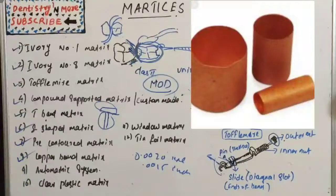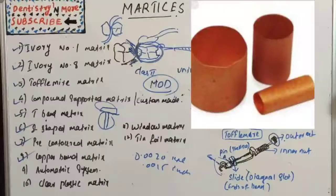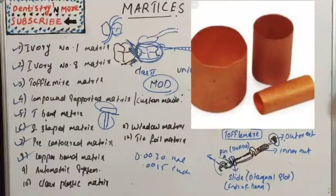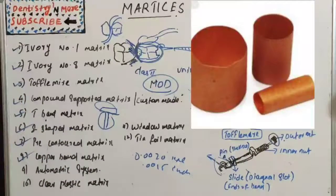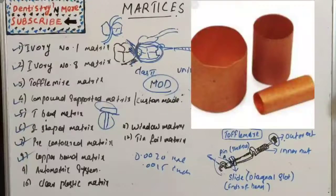Copper band matrix system uses copper bands of assorted sizes, which are cylindrical in shape and selected according to the diameter of the tooth to be restored. The bands are softened by heating to redness in a flame and quenched in water. After this, the bands can be stretched and shaped with contouring pliers, the occlusal height adjusted, and the band contoured to reproduce the proper shape of the contact area. It is mainly indicated for badly broken teeth receiving pin amalgam restoration and for complex class 2 cavities with large buccal or lingual extension.